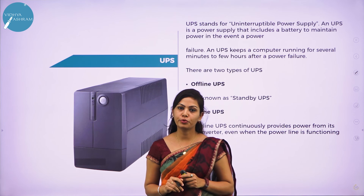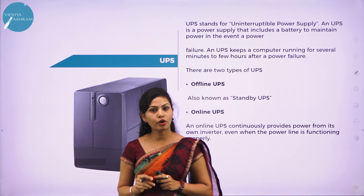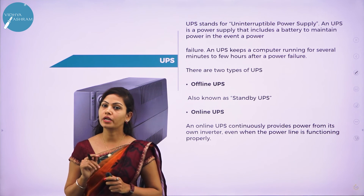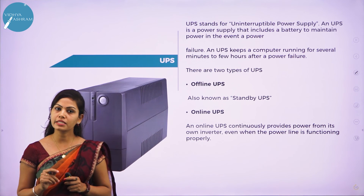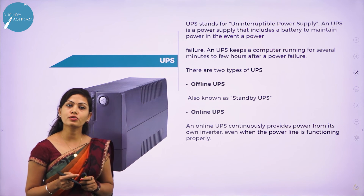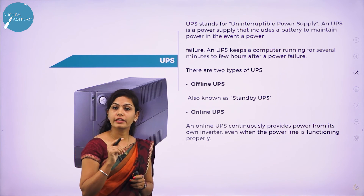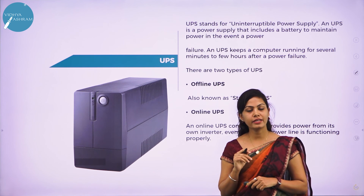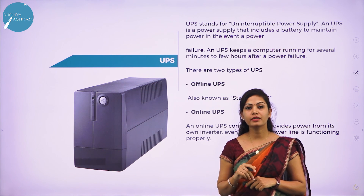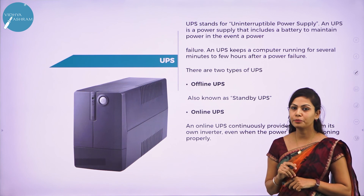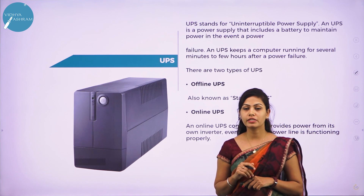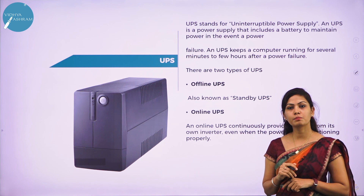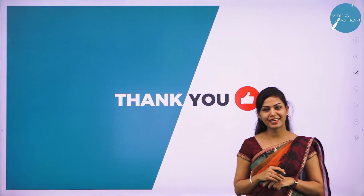Moving to the last part of this chapter: assembling a computer system. Computer configuration is the process of setting up your hardware devices and assigning resources to them so that they work together without problems. With this we have reached the end of Chapter 1: Typical Configuration of a Computer System. In the next session I will discuss Chapter 2, which is Boolean Algebra. Thank you.